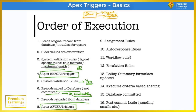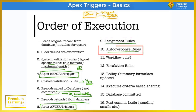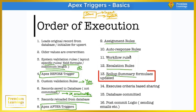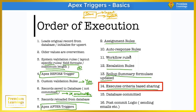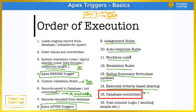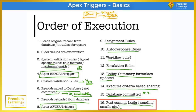Records are reloaded from the database, then the after trigger fires. You need to remember exactly when the before trigger fires versus when the after trigger fires. Then come lead assignment or case assignment rules, auto response rules, workflow rules, and escalation rules. Finally, rollup summary values are updated, record-based sharing via the security model is applied, and the data is committed if there are no errors in the sequence. Post-commit logic then executes if it exists.